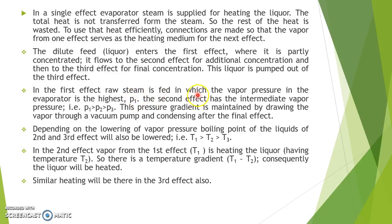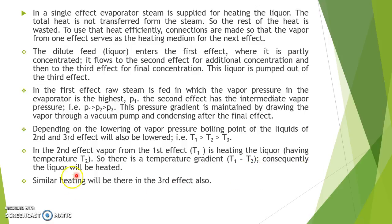In the first effect, raw steam is used, in which the vapor pressure in the evaporator is the highest — T1. The second effect has an intermediate vapor pressure, giving T1 greater than T2 greater than T3. This pressure gradient is maintained by drawing the vapor through a vacuum pump and condensing after the final effect. Depending on the lowering of vapor pressure, the boiling point of liquids in the second and third effects will also be lowered. In the second effect evaporator, vapor from the first effect at temperature T1 heats the liquor at temperature T2, giving a temperature gradient of T1 minus T2. Consequently the liquor will be heated, and similarly heating will be done in the third effect.